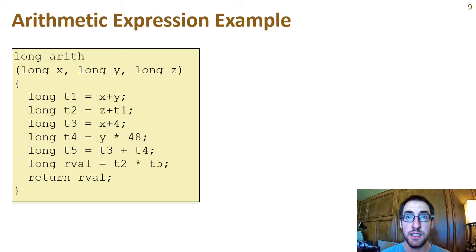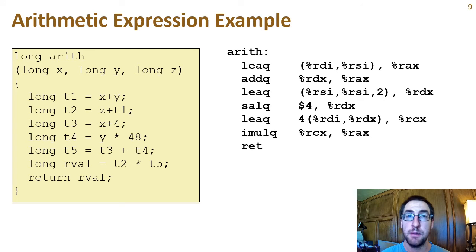Let's put some of these instructions into context with an example. Here's a function that takes three 64-bit integer arguments, x, y, and z. It then calculates several arithmetic expressions, eventually returning the quantity x plus y plus z times the quantity x plus 4 plus the quantity y times 48. Here is one way to generate assembly for this function. We can see several interesting instructions. Let's break down.